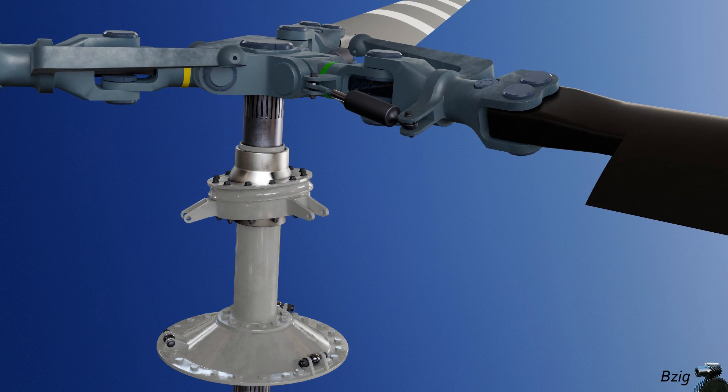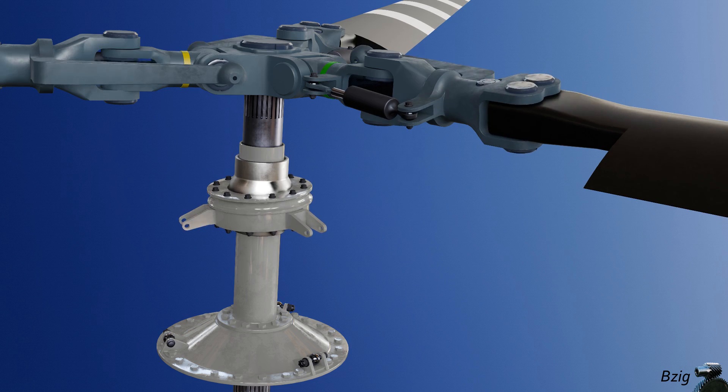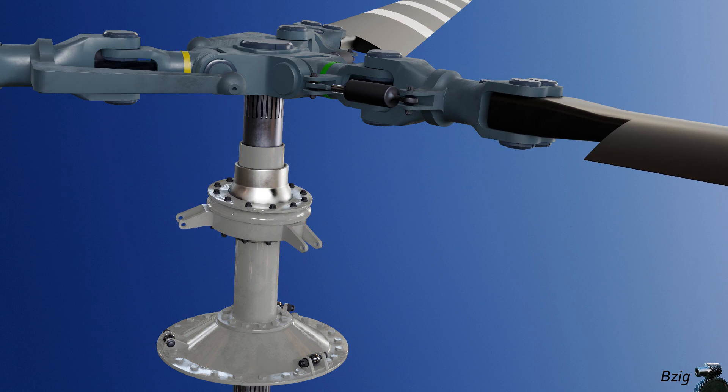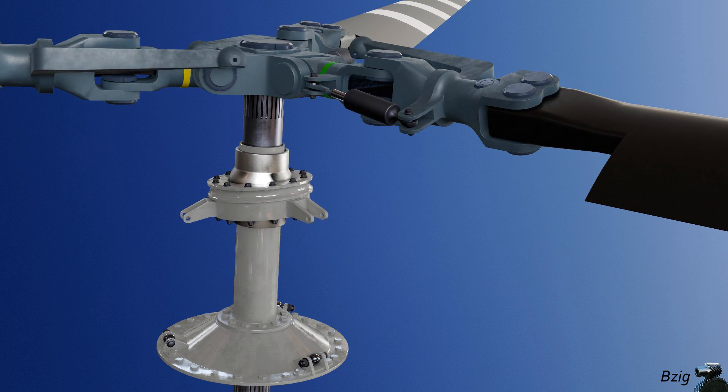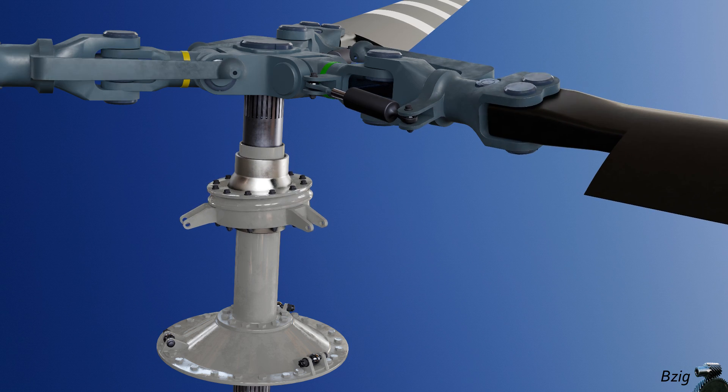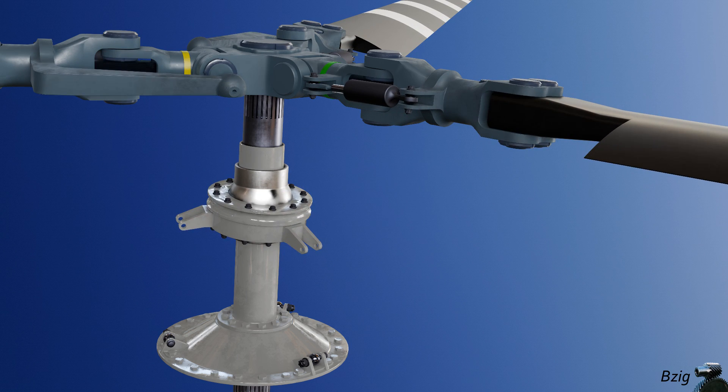The non-rotating swashplate would actually tend to rotate due to friction from the rotating swashplate, and there's normally a device called the stationary scissors that prevents that. I didn't animate it. Not exactly sure why. I guess I got lazy towards the end of building the 3D model here.